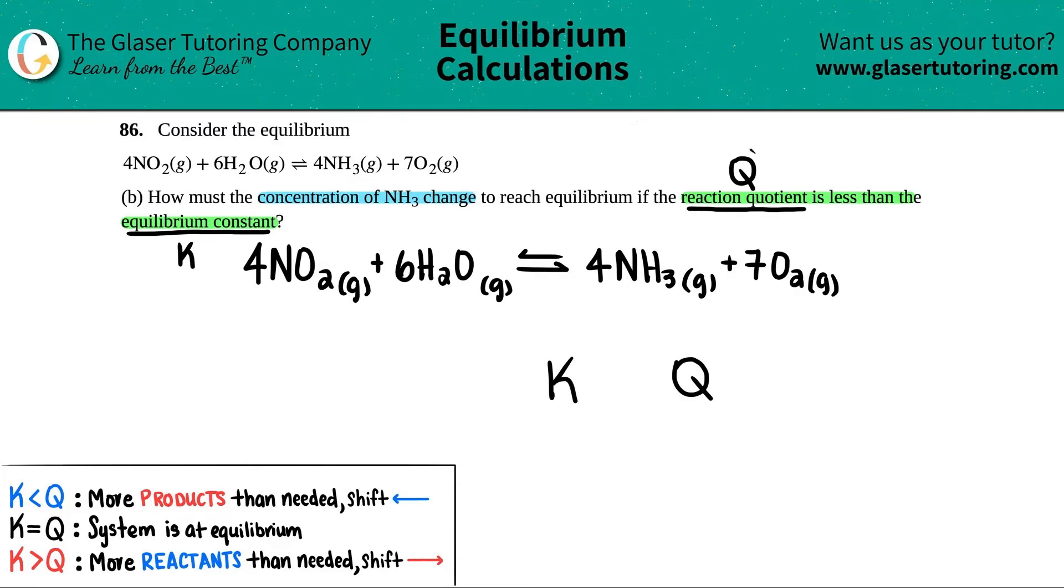If they're saying that the reaction quotient, the Q value is less than the equilibrium constant, I would draw my comparison as the K value would be greater, right? If the Q is less than, that means that the K has to be greater than. And remember, the alligator teeth always chomps at the bigger number. That was actually a pretty good drawing of teeth.